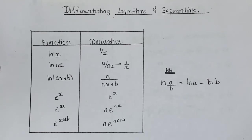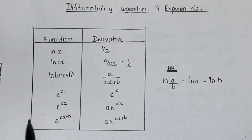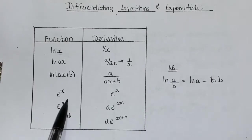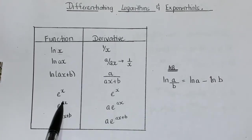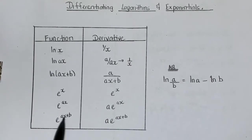Now with the exponentials, this one is quite easy. The derivative of e to the x is still e to the x. The derivative of e to the ax is a·e to the ax — you differentiate the power to get a, and then multiply by the original. So for e to the ax, you get a multiplied by the original function.